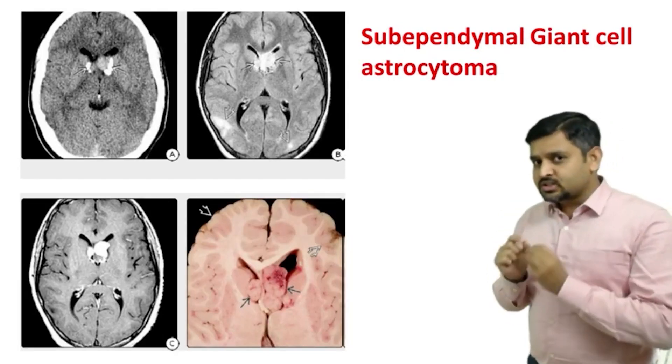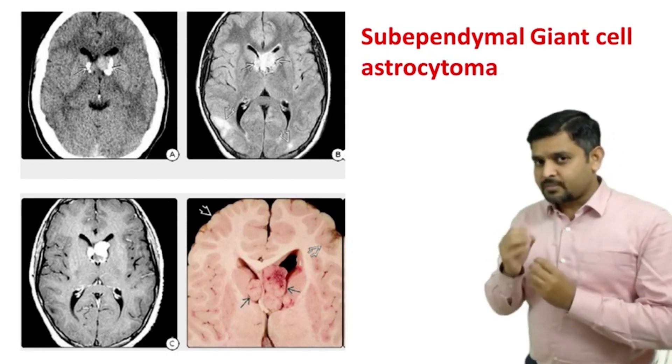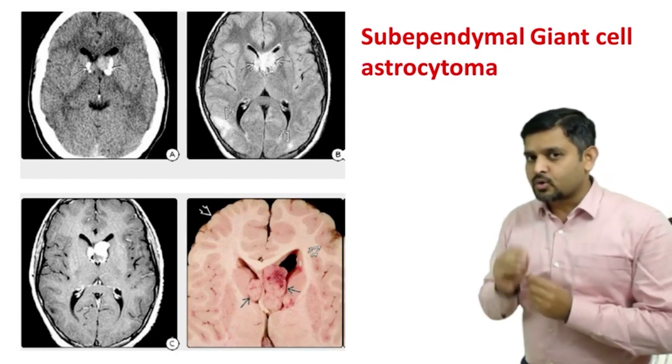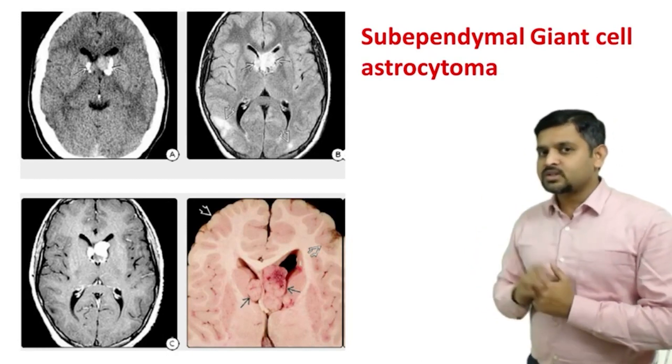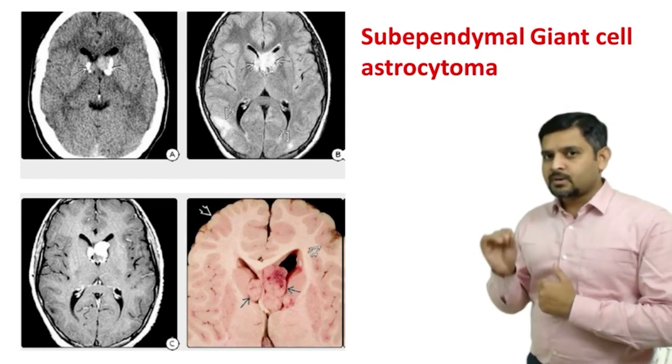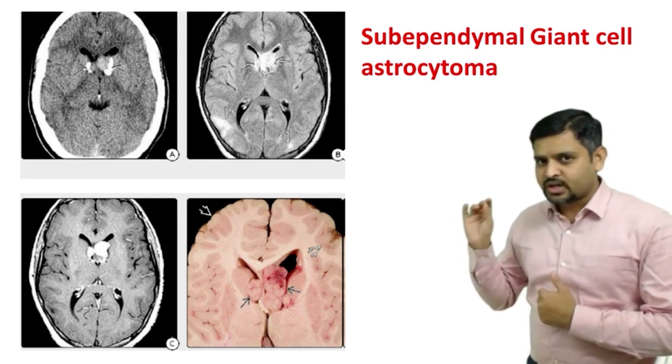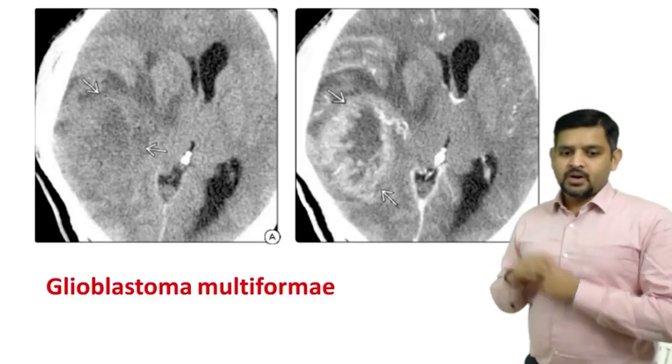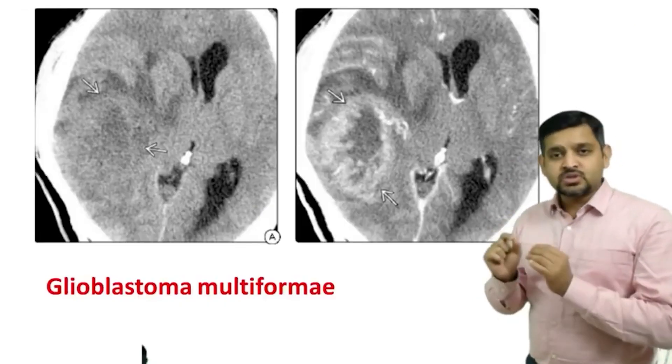If you see a lesion in tuberous sclerosis coming from the foramen of Monro, always think of subependymal giant cell astrocytoma.